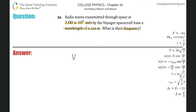You got to know this formula. Velocity of a wave is equal to the wavelength multiplied by the frequency. To find the frequency, we have to divide by the wavelength, so frequency is equal to the velocity of the wave divided by the wavelength.